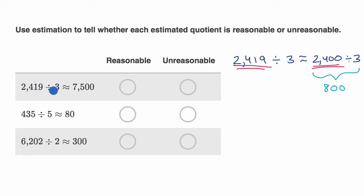So 2,419 divided by three should be roughly around 800. Now they're saying that it's roughly 7,500. That's a lot more than 800. If they said 750, then I'd say that's pretty reasonable. But they're saying 7,500, that's almost 10 times more than 800. So this, I would say, is unreasonable.